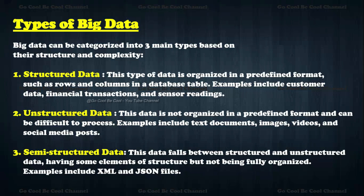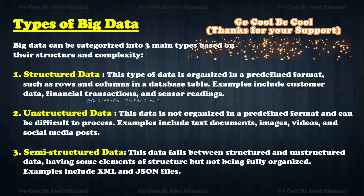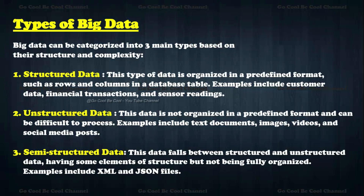Unstructured data is not organized in any predefined format and can be difficult to process. Examples include text documents, images, videos, and social media posts. Coding is also one area — we have greater-than and less-than symbols with lots of comments and documentation. Mail content and text content are also unstructured because it is difficult to understand what is being discussed. Coding produces documentation, mail addressing, and similar content covered under unstructured data.